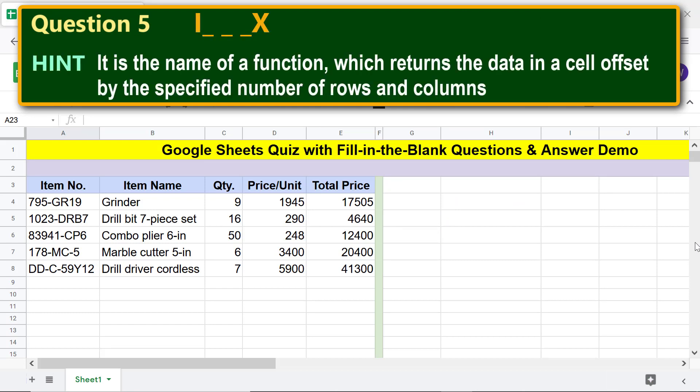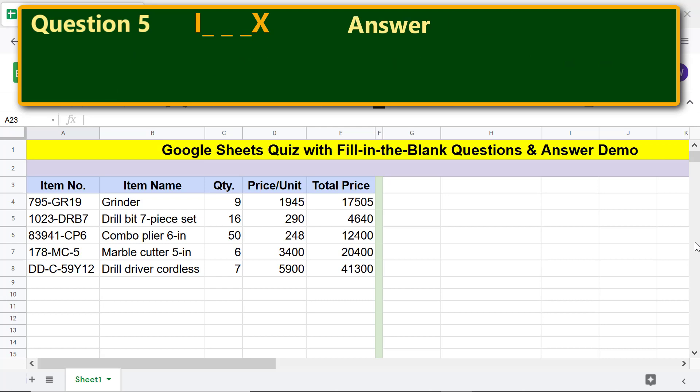Question 5. Hint: it is the name of a function which returns the data in a cell offset by the specified number of rows and columns. The answer is index.